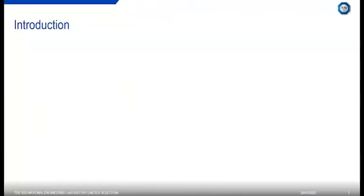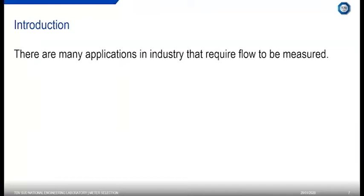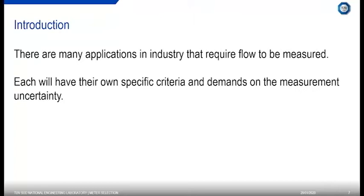Now on to the introduction. There are many applications in industry that require flow to be measured — not just oil and gas, but a variety of different industries: process, food, pharmaceutical, and water industries. Flow measurement is needed for a variety of reasons: safety, process control, process optimization, fiscal measurement, and custody transfer. Each of these will have their own specific criteria and demands on the measurement uncertainty.